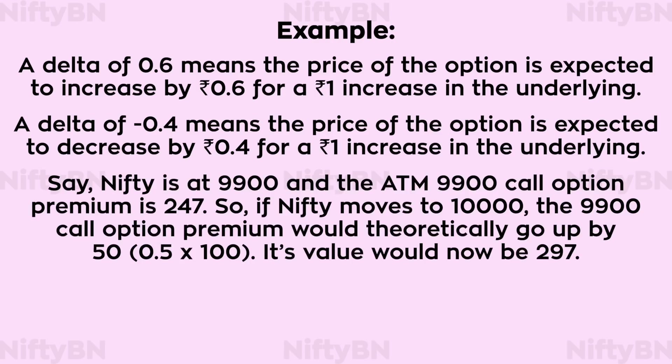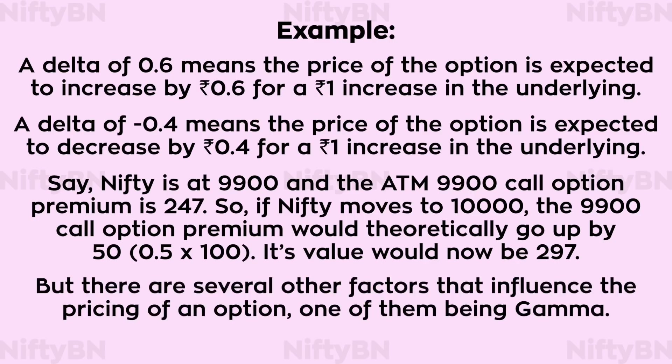Say Nifty is at 9900 and the at-the-money 9900 call option premium is 247. If Nifty moves to 10,000, the 9900 call option premium would theoretically go up by 50, and its value would now be 297. But there are several other factors that influence the pricing of an option — one of them being Gamma.